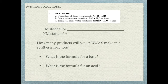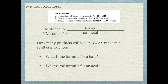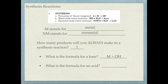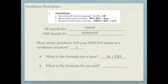Let's see what all of this means. M stands for your metal in a metal oxide, and NM stands for your non-metal. For synthesis reactions, you're always going to produce one product. If you're going to be forming a base, what makes a base a base is it is a metal and hydroxide. To write the formula for this ionic compound, you need to cross your charges.